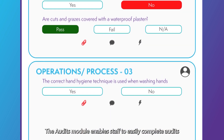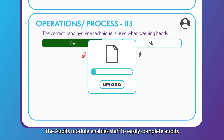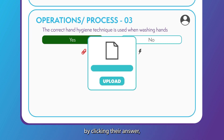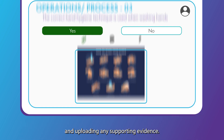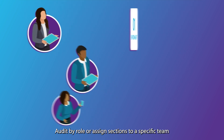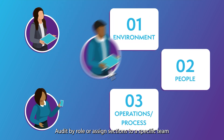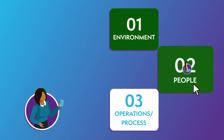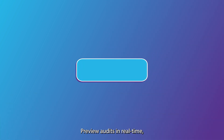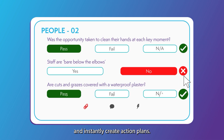The audits module enables staff to easily complete audits by clicking their answer and uploading any supporting evidence. Audit by role or assign sections to a specific team to share the responsibility. Preview audits in real time and instantly create action plans.